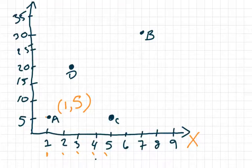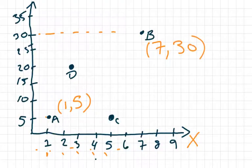All right, let's go with point B. I'm looking at my x values first. Point B is over 7. And then I'm looking at my y values going up the vertical axis. So my ordered pair is 7, 30.